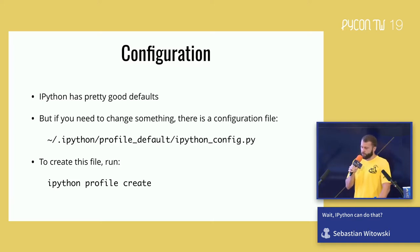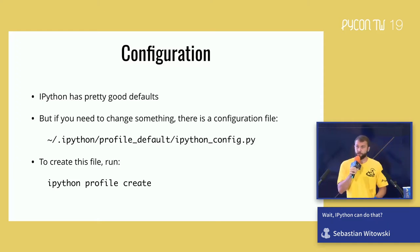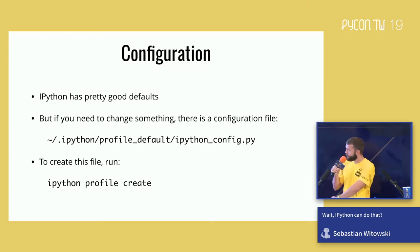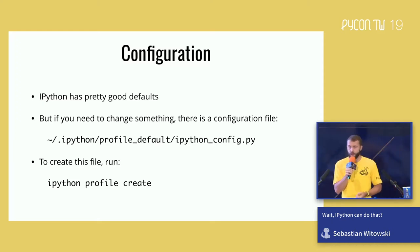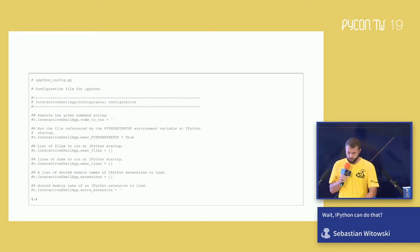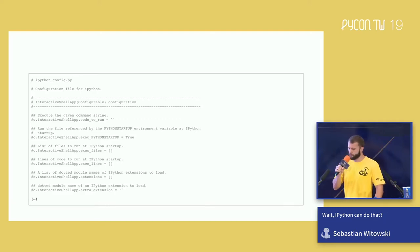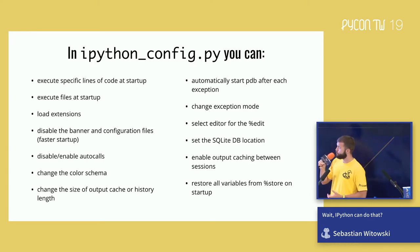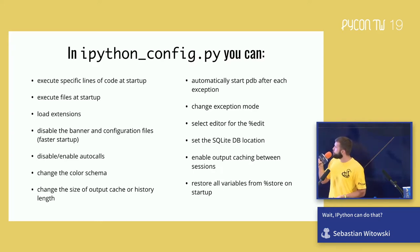IPython comes with a lot of good defaults — I've never actually felt the need to modify the configuration file. But if you want to change something, it's very easy. The default configuration lives in the IPython config file, located in the current user's directory. When you first install IPython the file isn't there — you'll have to create it with `ipython profile create`. Inside that file you'll see a huge amount of options: execute specific lines or files when IPython starts, load extensions, change the color scheme, change exception modes, or select a different editor for the `edit` command.